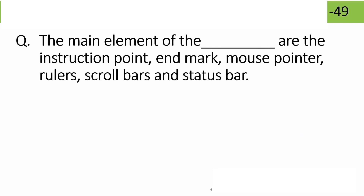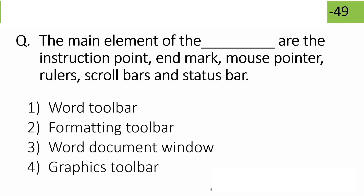What are the main elements of the MS Word document window? The elements include: insertion point, mouse pointer, rulers, scroll bar, and status bar — these are the key components of the Word document window.